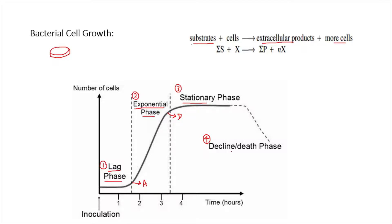After the stationary phase, you have the death or decline phase. During this phase, bacterial cells become dead because as more and more cells grow, they continue to produce toxic inhibitory compounds and there is depletion of nutrient media. Gradually, after a certain period of time, the bacterial cells die. The transition from lag to exponential is the acceleration phase, and from exponential to stationary is the deceleration phase.